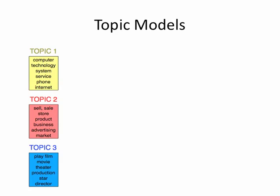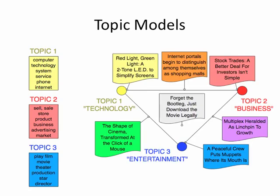A bit of a review of Topic Models. Topic Models take as input a large collection of documents, you tell it how many topics you want it to find, and it does it. And, what's more — this is the aspect we're going to be using for our system — it also gives you a distribution for each document over topics. You can represent that as a simplex, which for three topics is just a triangle. So this shows that 'red light, green light, a two-tone LED to simplify screens' is all about the technology topic, and another article, 'Forget the Bootleg, just download the movie legally,' is a mixture of technology, business, and entertainment.